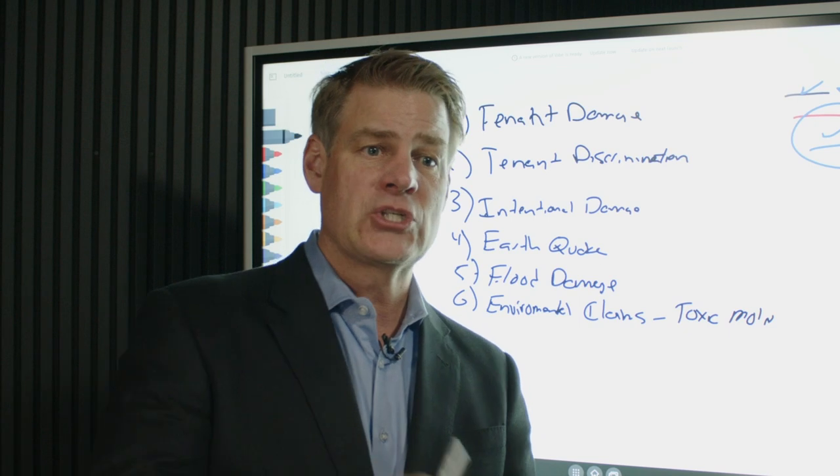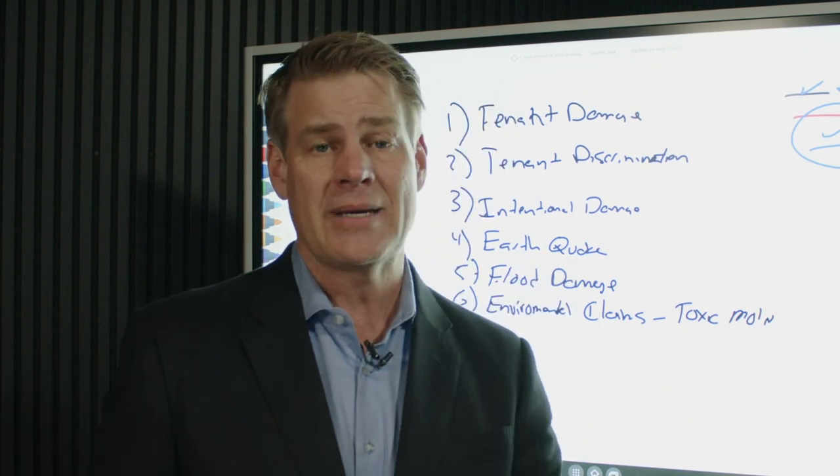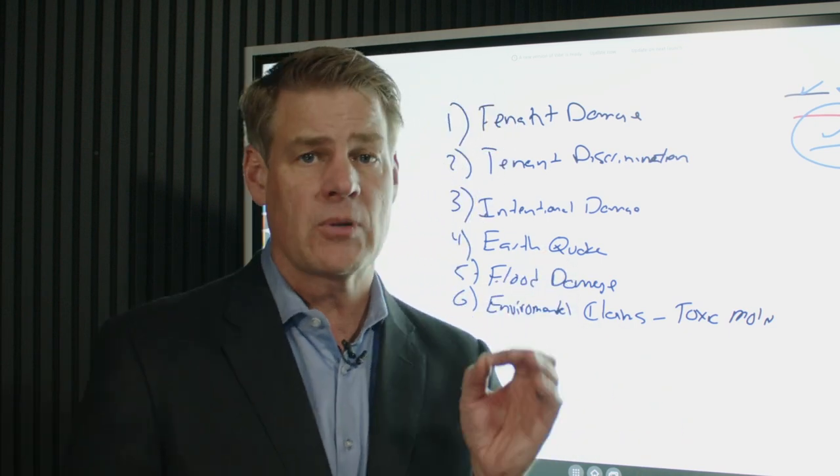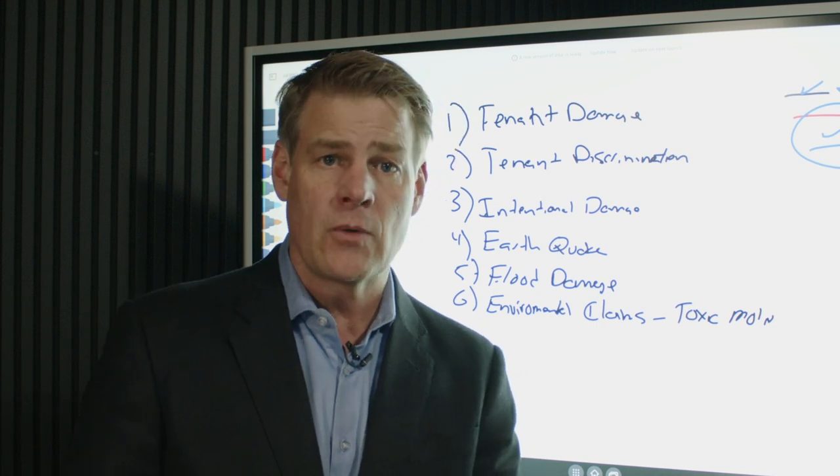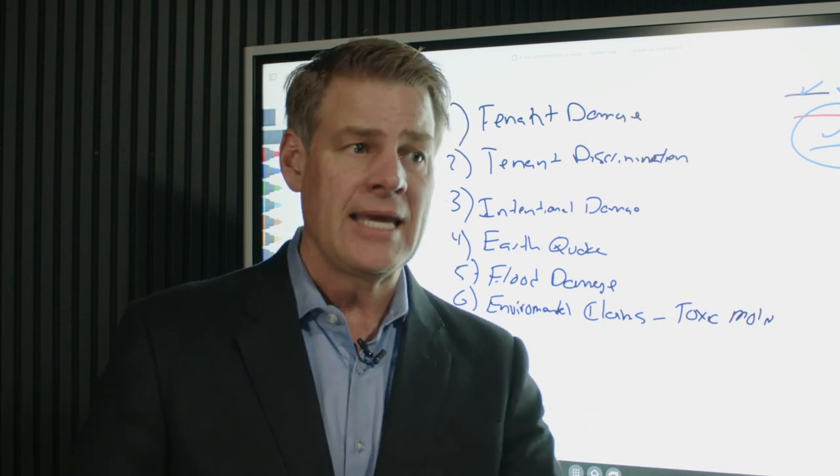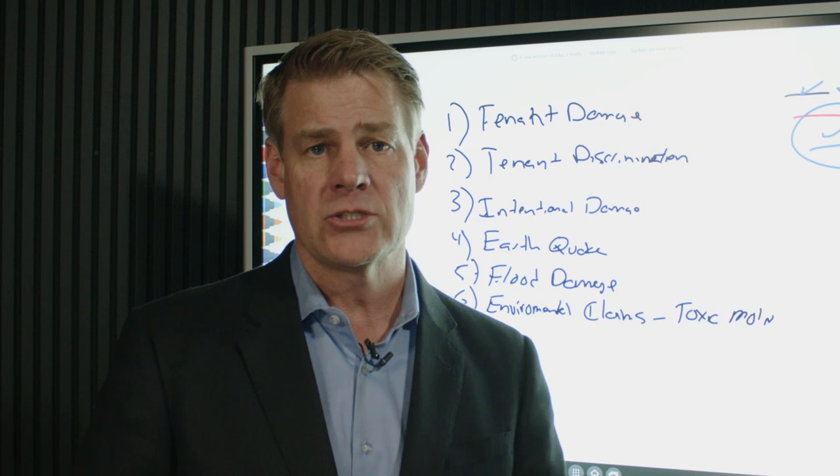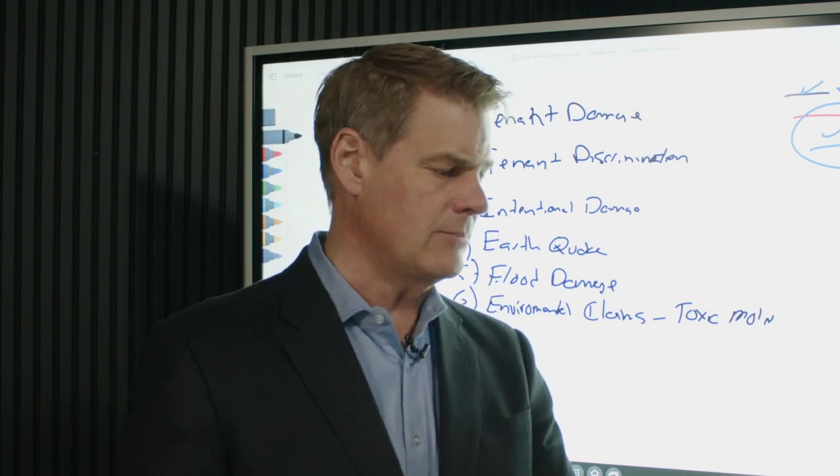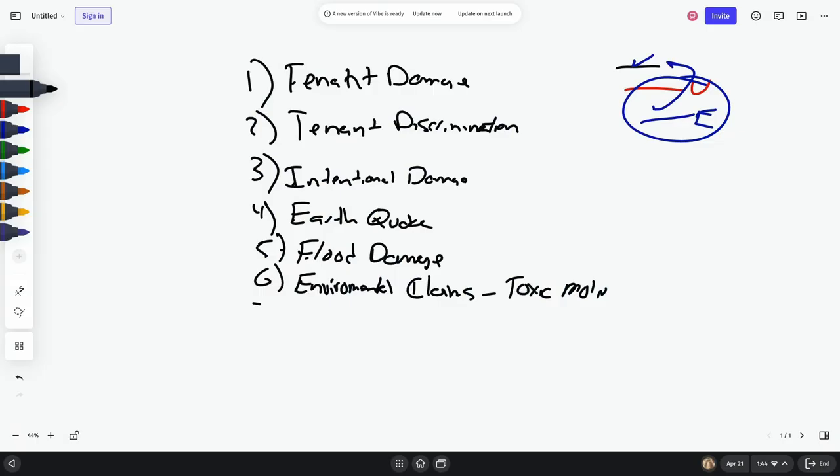There's one situation where a client was sued because the tenant created the issue because they didn't hook the washing machine up the proper way because they left out a little rubber gasket. It was leaking, mold developed, and they turned around and sued the landlord. Environmental claims are a huge one that you need to watch out for.